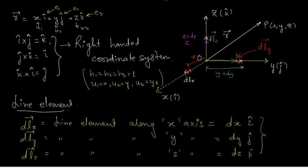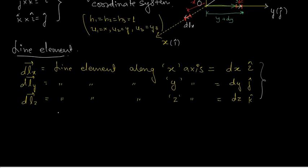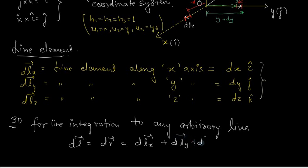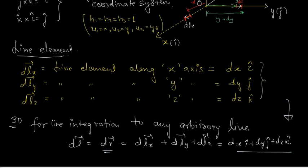Now if you are in 3D and you have to do a line integration, for line integration in the same Cartesian coordinate system, to any arbitrary line, the DL vector is nothing but the DR vector. That is DLX vector plus DLY vector plus DLZ vector, which is DX i-cap plus DY j-cap plus DZ k-cap. You usually write that DR vector this way, but the theory behind it is the general coordinate system.